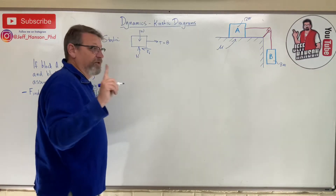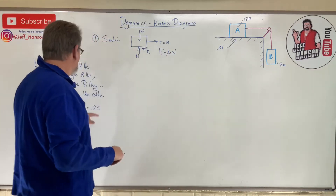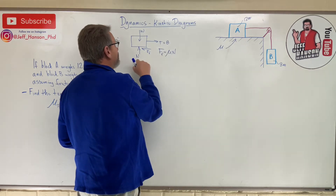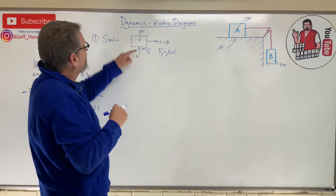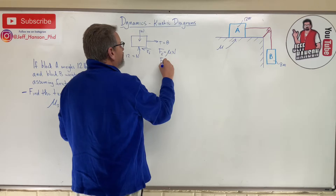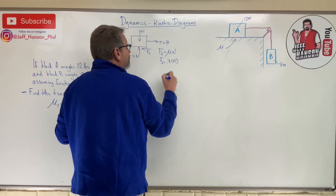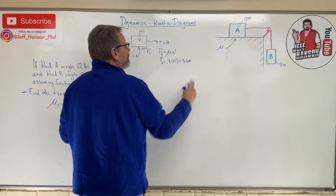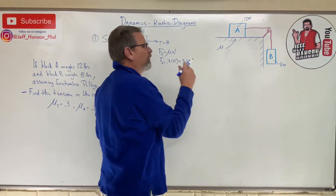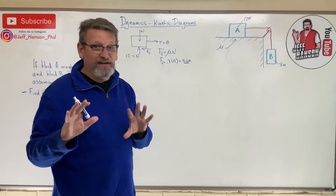For the static case, mu sub s is 0.3. The normal force equals the weight of block A, which is 12 pounds. So the maximum static friction force is 0.3 times 12, which equals 3.6 pounds. But the tension is 8 pounds and the most friction possible is 3.6 pounds — so the system is moving. It is not a static system.